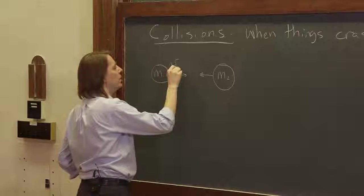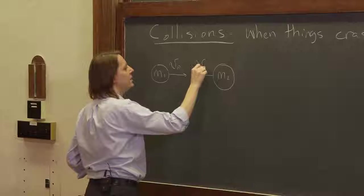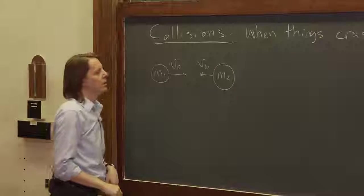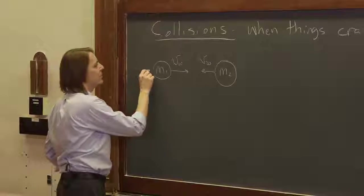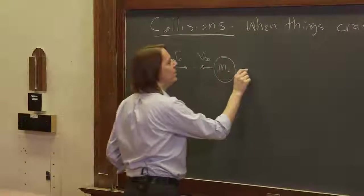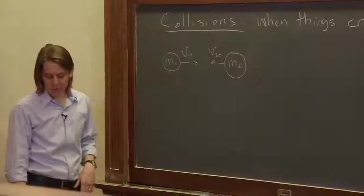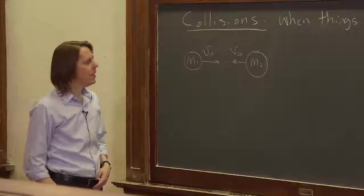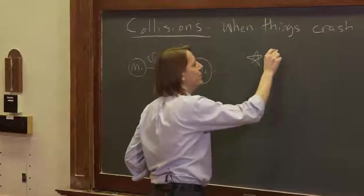They might both be moving—maybe this one has v1 naught and this one has v2 naught. Those are on a collision course, we would say. But to get started, we just do our problems in one dimension: one dimension, two masses.